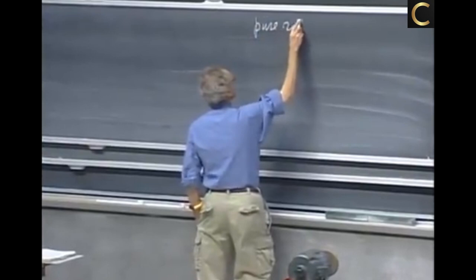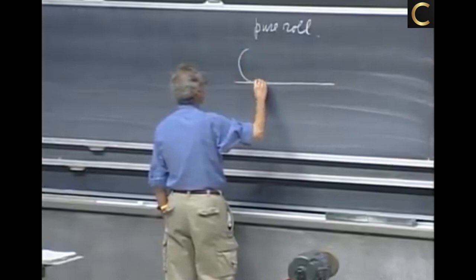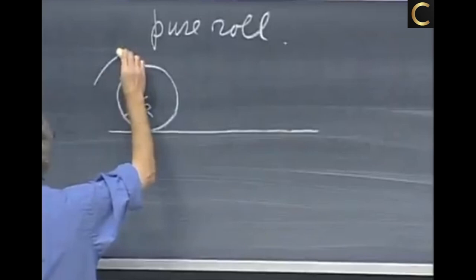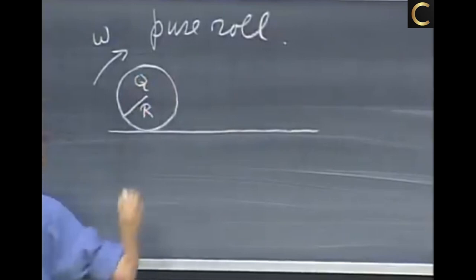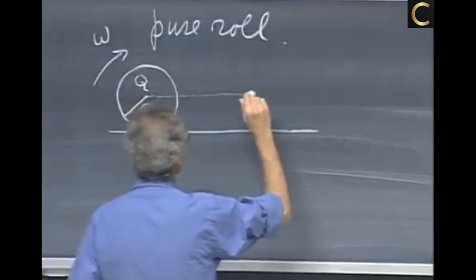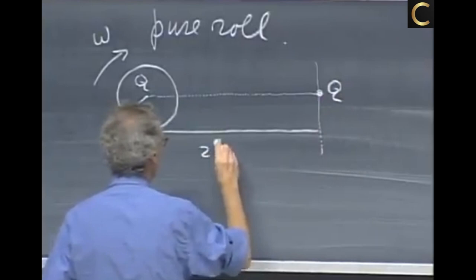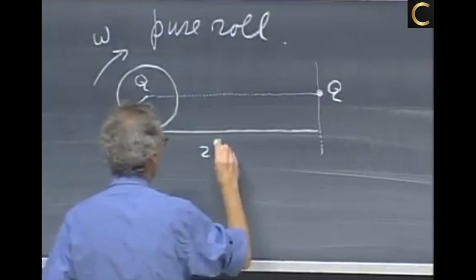What is pure roll? If here is an object, cylinder or sphere, with radius r, and I'm going to rotate it like this and roll it in this direction, the center is called point Q. Once it has made a complete rotation, if then the point Q has moved over a distance 2πr, then we call that pure roll.